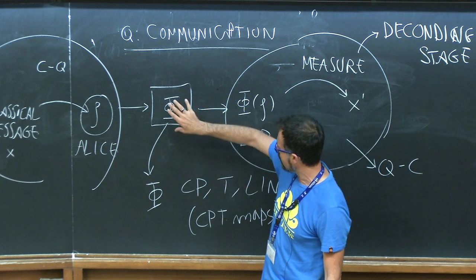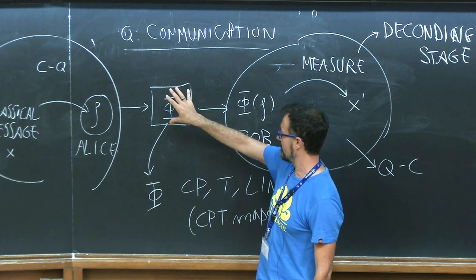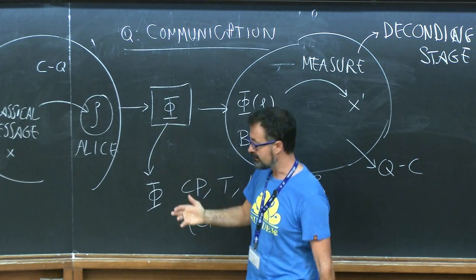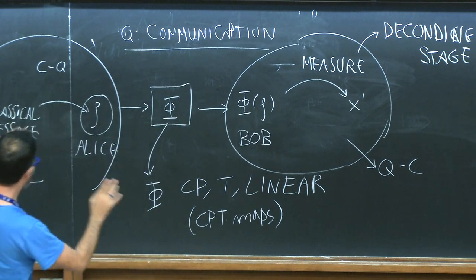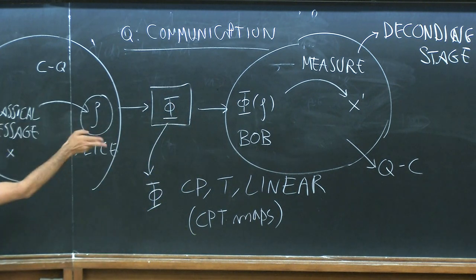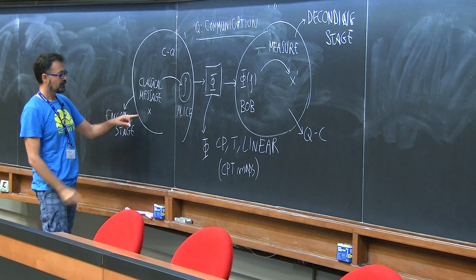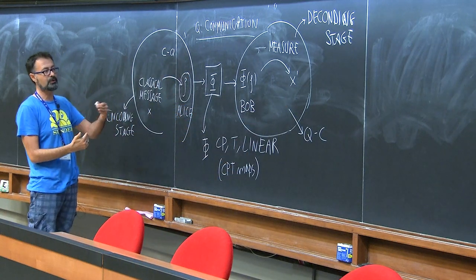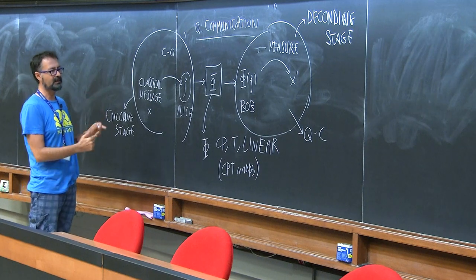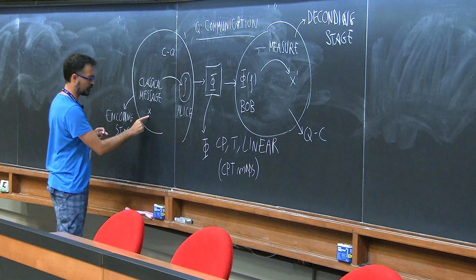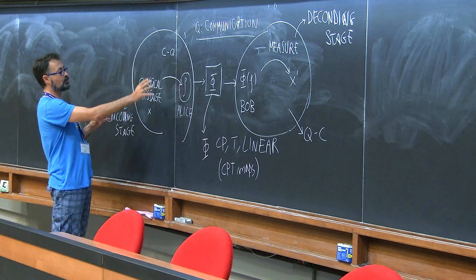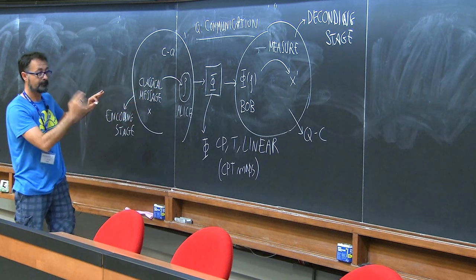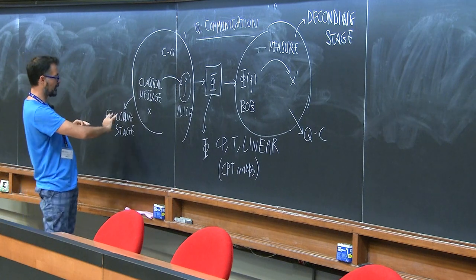They don't have control over the noise, which represents the noise of the communication line, associated with the structure of the environment. But in order to improve the communication efficiency — that is, to improve the relation between X prime and X, to reduce the error probability that X prime does not correspond to the value Alice selected — they can try to optimize the encoding and decoding stages.